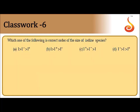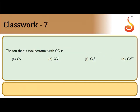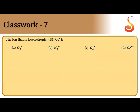Which of the following is the correct order of size in the iodine species? The anion size is always larger than the neutral atom, and the cation size is always smaller than the neutral atom. The answer is option D.